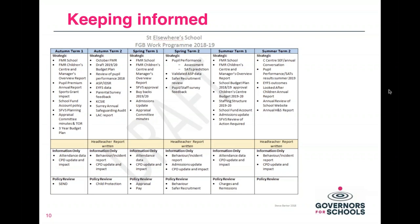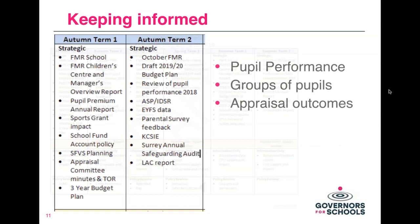All I've done on this slide is isolate and enlarge the two strategic boxes for the first two meetings — Autumn 1 and Autumn 2. The idea of the flat structure is that all governors get to know all the important key performance indicators of the school, because everybody is involved in every meeting. You don't have governors saying 'don't talk to me about pupil data, I sit on the finance committee.' Everybody is exposed to all the information shared at all meetings. What we're talking about specifically with regard to teaching, learning and assessment is pupil performance, the performance of different groups of pupils, and appraisal outcomes.